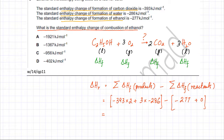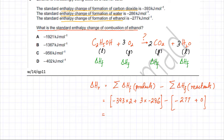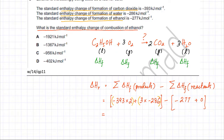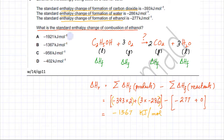Using a calculator to solve this expression — remember, when solving energetics questions be very careful with signs, use brackets, and break calculations into smaller chunks if unsure how your calculator operates. Any sign error will give an incorrect final answer. The answer comes out to be minus 1367 kilojoules per mole, which corresponds to option B — so option B is the correct answer for this question.